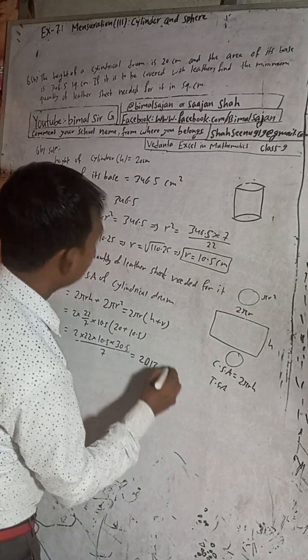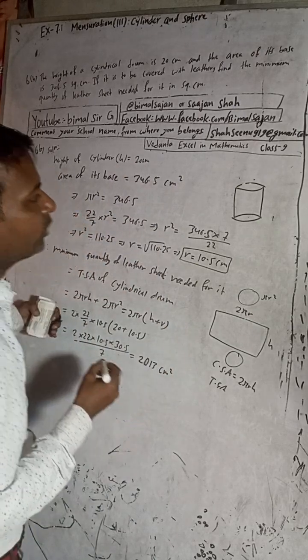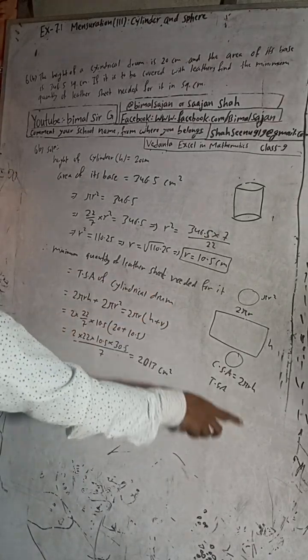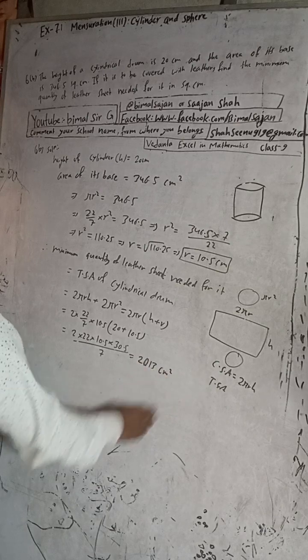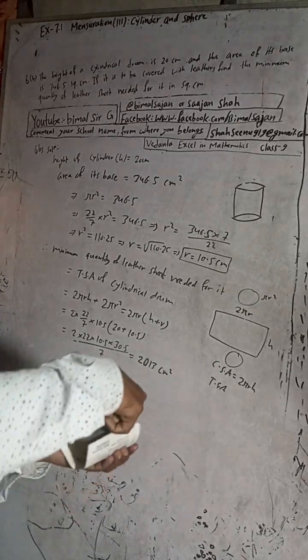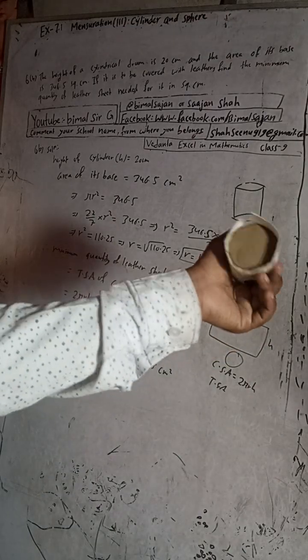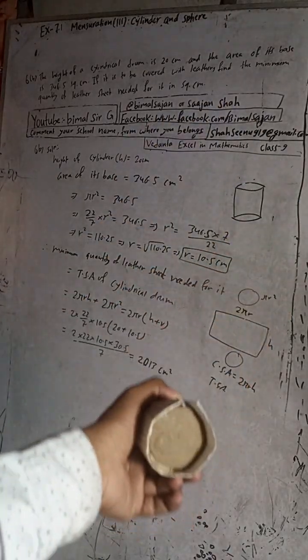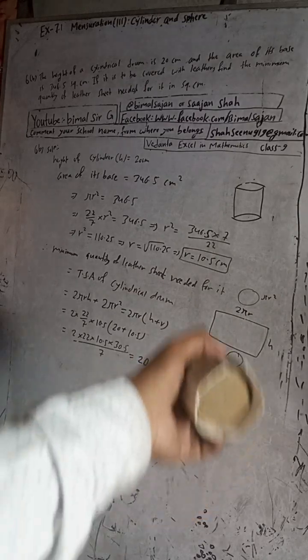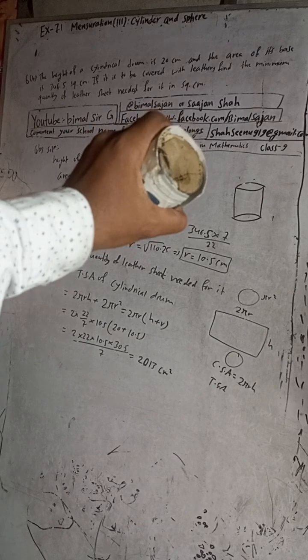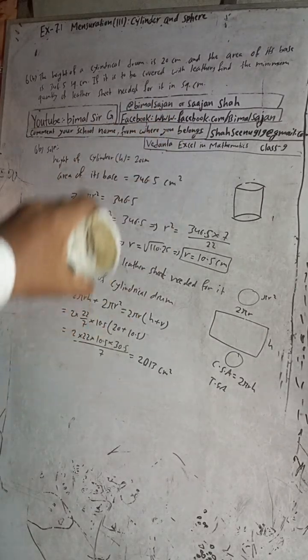So the book answer is 2013. This is our correct answer. The minimum quantity of leather sheet needed is equal to total surface area, that is equal to 2013. So dear students, I showed you how to solve this question by this experimental demonstration of cylinder. If you like this video, press the like button, give a sweet comment, share with your friends, so that you all can secure good marks in your SE examination. Keep watching, keep supporting, see you in the next video.